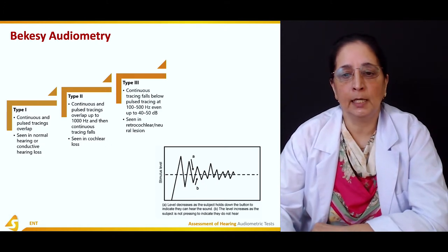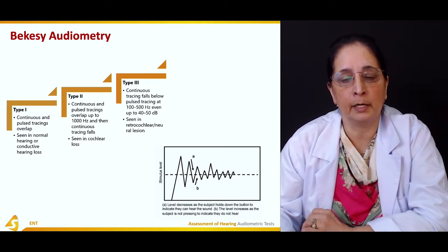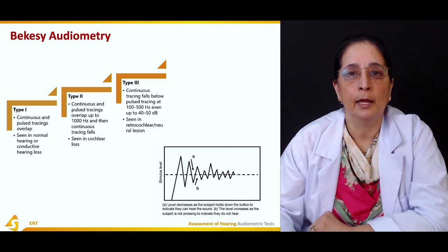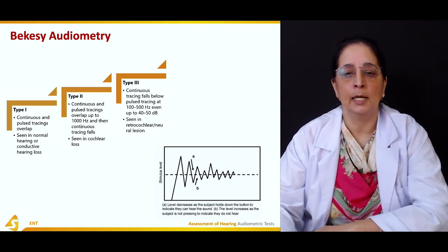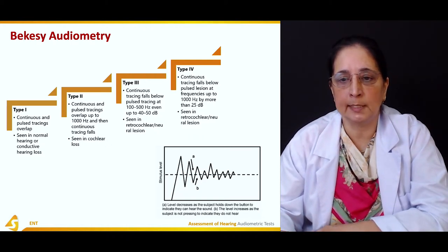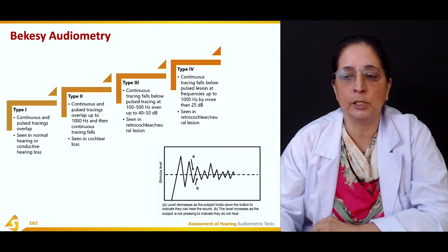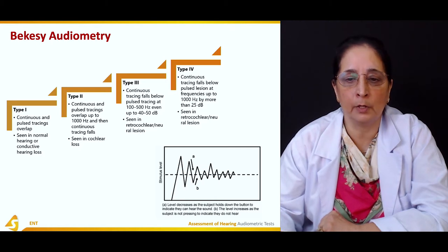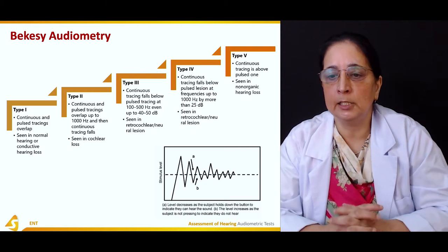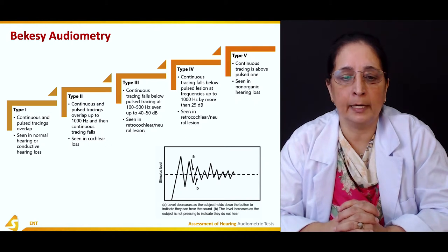In VEXI Type 3, the continuous tracing falls below the pulsed tracing at 100–500 Hz, even up to 40–50 decibels. This is seen in retrocochlear or neural lesions. In Type 4, the continuous tracing falls below the pulsed tracing at frequencies up to 1000 Hz by more than 25 decibels, also seen in retrocochlear or neural lesions. In Type 5, the continuous tracing is above the pulsed tracing, seen in non-organic hearing loss.